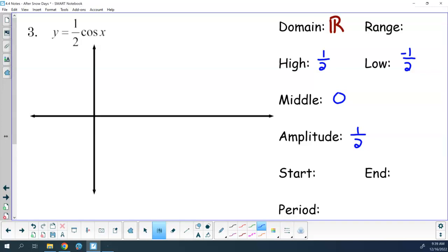For my period, I have to go 2π divided by B. What is my B value? One. So 2π divided by one is 2π. The grown-up softball should be able to answer these even if you're not paying attention. So if my start is at zero and it takes me 2π to get a full lap in, where's my end? 2π.